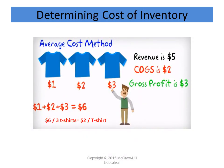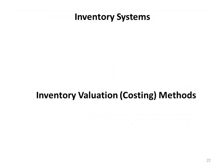The third assumption is the weighted average method. Here the cost price is the average cost price. The first t-shirt costs $1, the second $2, and the third $3. Their average is ($1 + $2 + $3) / 3 = $2 per t-shirt on average. Again ignoring that the customer wants the third t-shirt, we follow the assumption: cost of goods sold is the average cost of $2. Subtracting from the selling price of $5, we get gross profit equal to $3.